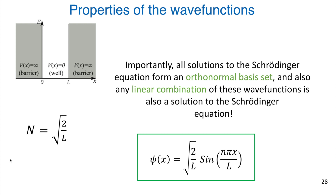Note what I've written here. Importantly, all solutions to the Schrödinger equation form an orthonormal basis set — we're going to get into what that means. Also, any linear combination of these wave functions that are solutions to the Schrödinger equation are also solutions to the Schrödinger equation. You can make linear combinations of these wave functions, and the only thing you can change is that little n — you can set that to any positive integer, with one being the smallest.